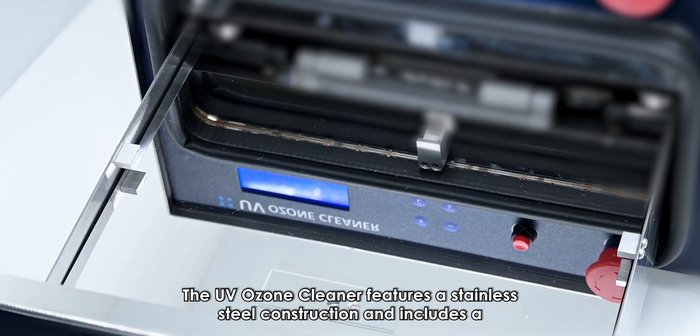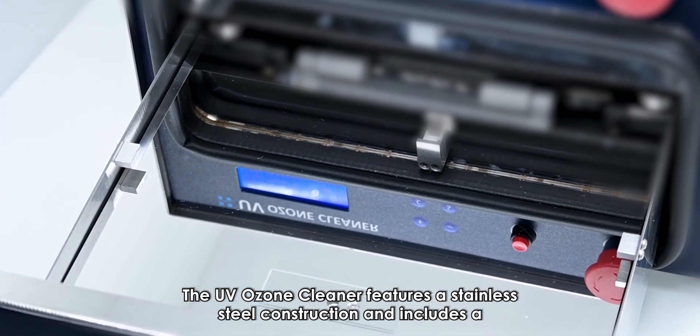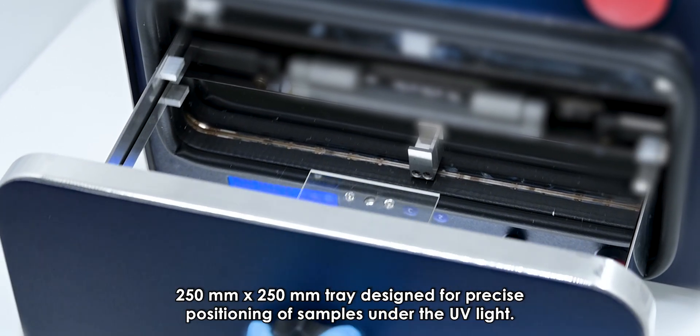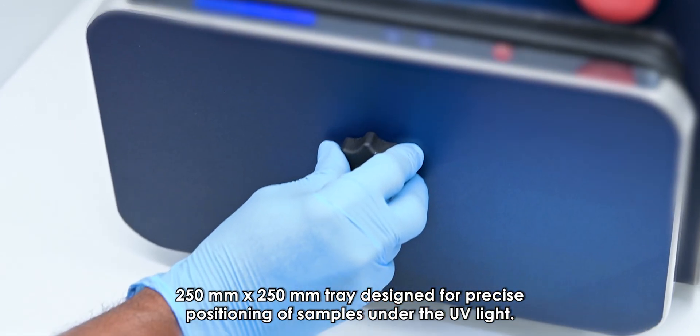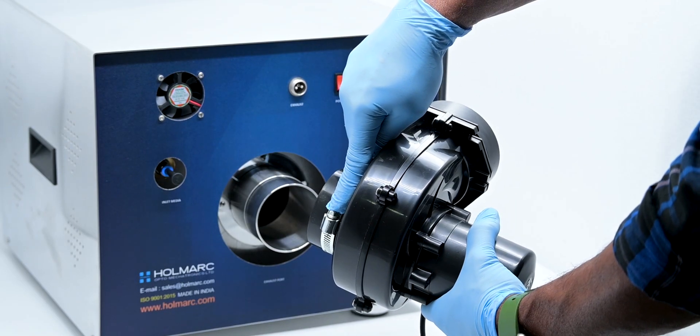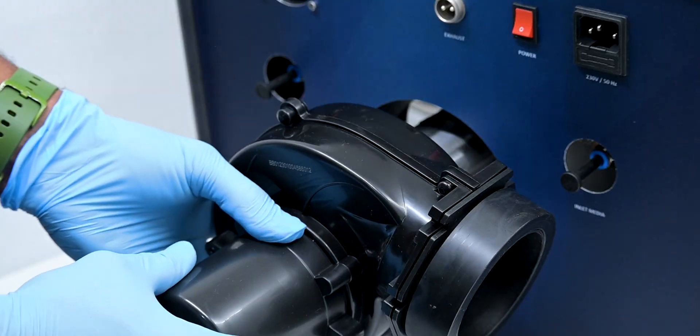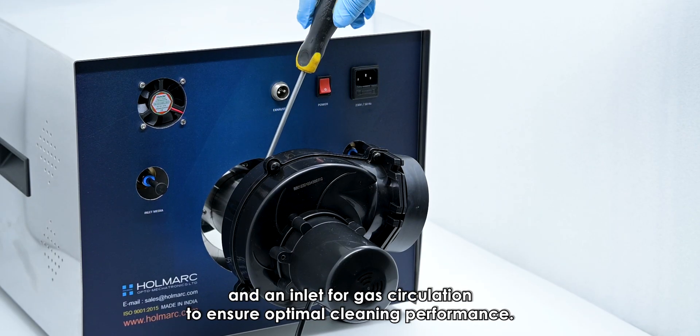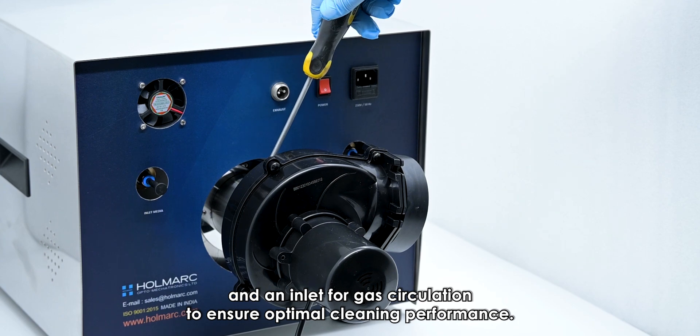The UV ozone cleaner features a stainless steel construction and includes a 250 millimeter by 250 millimeter tray designed for precise positioning of samples under the UV light. It also incorporates an exhaust port and an inlet for gas circulation to ensure optimal cleaning performance.